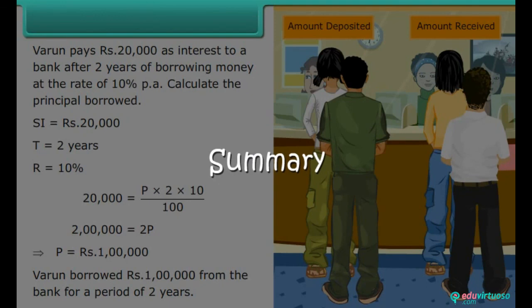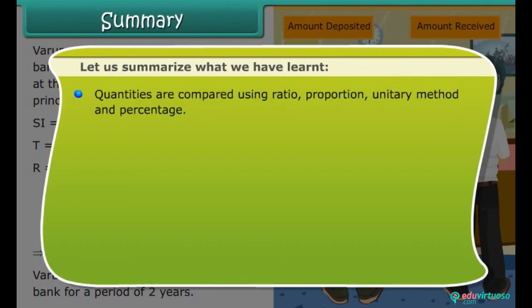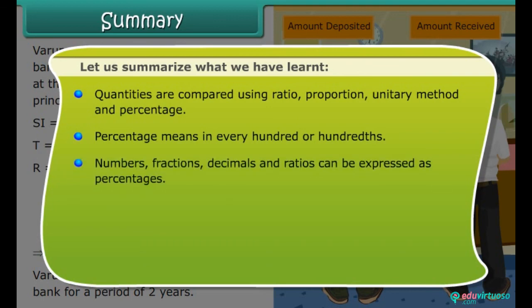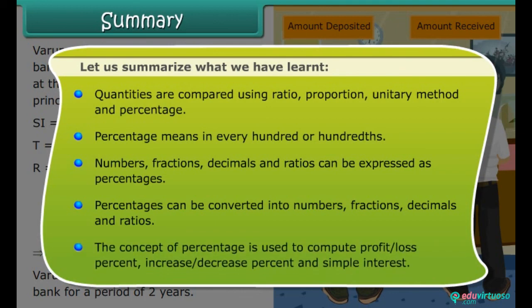Summary: Let us summarize what we have learned. Quantities are compared using ratio, proportion, unitary method, and percentage. Percentage means in every hundred, or hundredths. Numbers, fractions, decimals, and ratios can be expressed as percentages. Percentages can be converted into numbers, fractions, decimals, and ratios. The concept of percentage is used to compute profit or loss percent, increase or decrease percent, and simple interest.